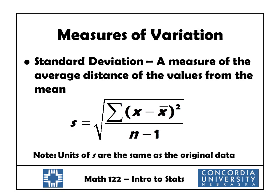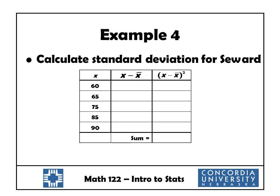Our next measure is the standard deviation, which is much more complicated but also much more meaningful. Standard deviation is informally a measure of the average distance of the values from the mean. The formula takes each x value, subtracts the mean, squares that difference, adds them all up, divides by n minus 1, and takes the square root of the whole expression. The units of the standard deviation are the same as the original data — here, degrees Fahrenheit.